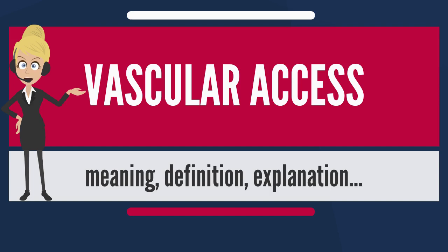A fistula will take a number of weeks to mature, on average perhaps 4–6 weeks. During treatment, two needles are inserted into the vein — one to draw blood and one to return it. The orientation of the needles takes the normal flow of blood into account: the arterial needle draws blood from the upstream location while the venous needle returns blood downstream. This sequence prevents partial recycling of the same blood through the dialysis machine, which would lead to less effective treatment.